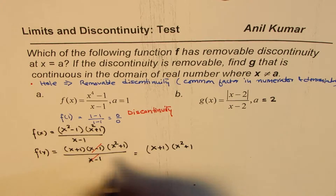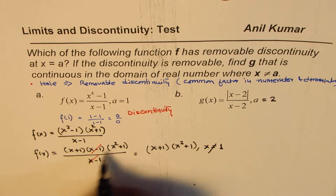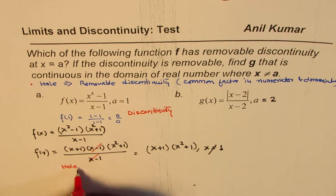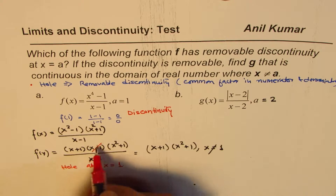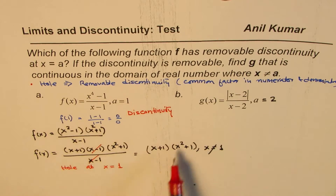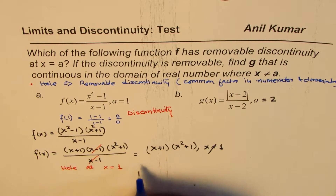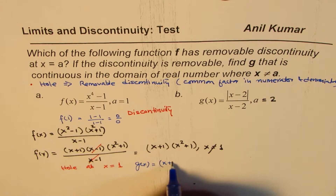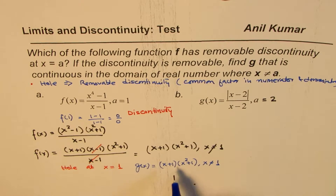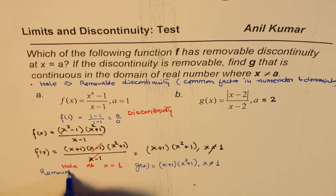So that is the function f of x, where we should note that x is not equal to 1, since we canceled that common factor. This really means that there is a hole at x equals 1 because they've canceled out. Now we have to provide the function which is continuous in this domain, with x not equal to 1. So we can write g of x as x plus 1 times x squared plus 1, where x is not equal to 1. Since it is a hole, we call this a removable discontinuity.